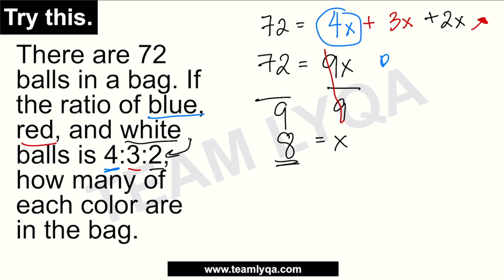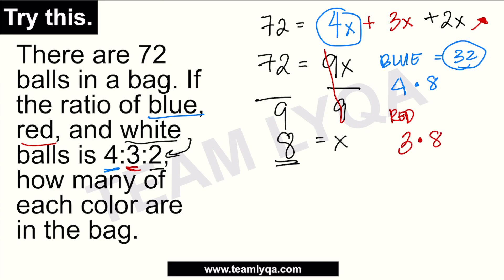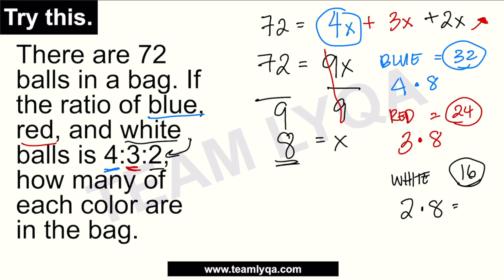For blue, the formula is 4x: 4 times 8 = 32 blue balls. For red balls, the number is 3x: 3 times 8 = 24 red balls. For white balls, it's 2x: 2 times 8 = 16 white balls. So the answer is 32 blue, 24 red, and 16 white balls. To check: 24 plus 16 is 40, plus 32 is 72. Tama talaga tayo dito!